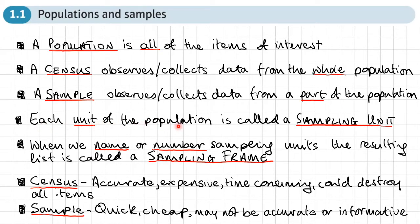Each unit of the population is called a sampling unit. When we name or number sampling units, the resulting list is called a sampling frame.